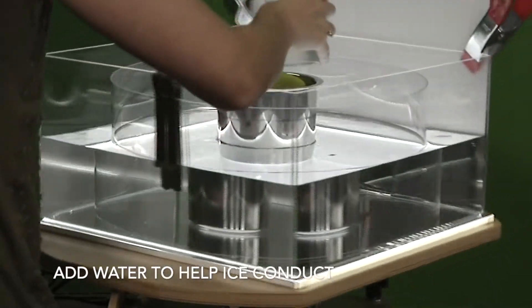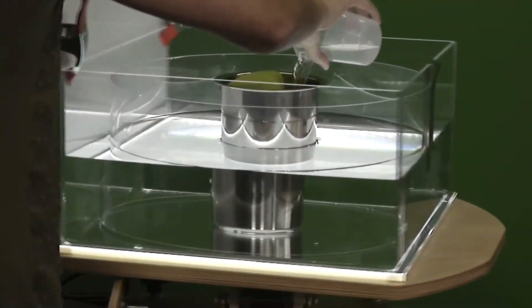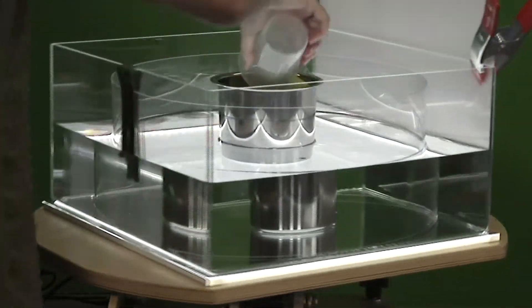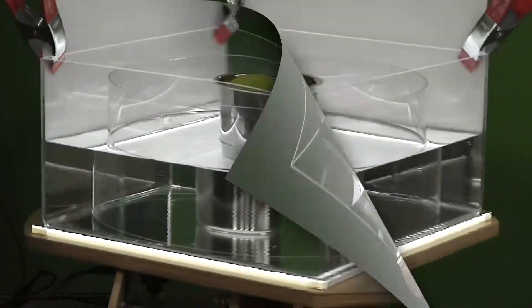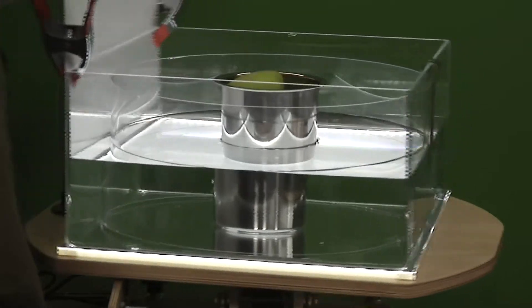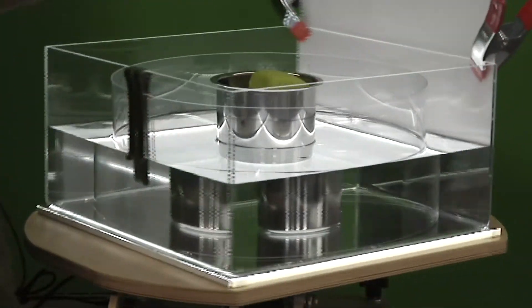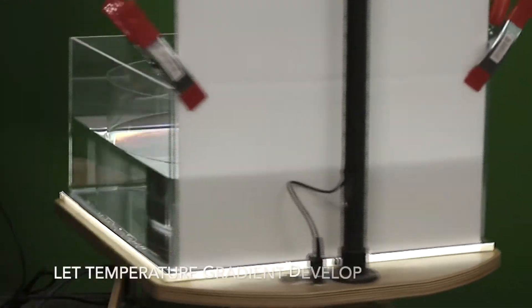We add some water to help the ice conduct and make sure there's no air pockets between the ice cube and so the whole metal cylinder becomes cold. This cools the water next to the metal cylinder, so the water in the center of the tank is colder than the water at the edges of the tank.